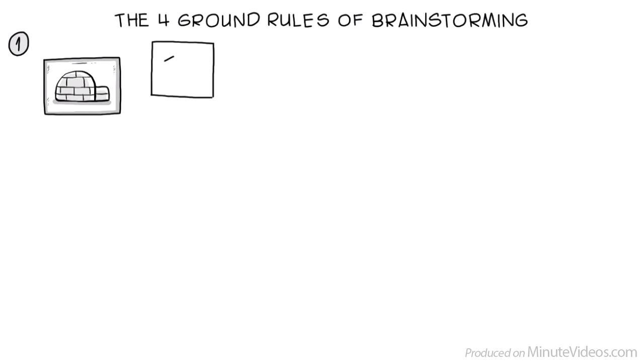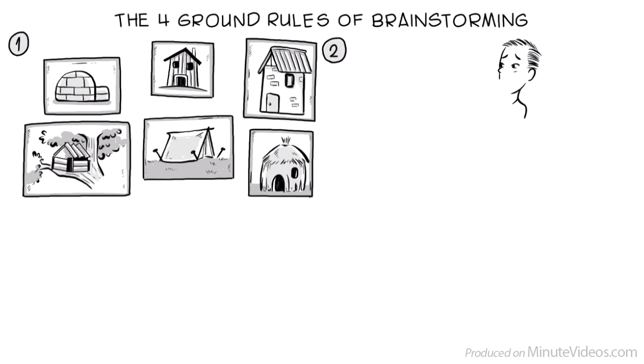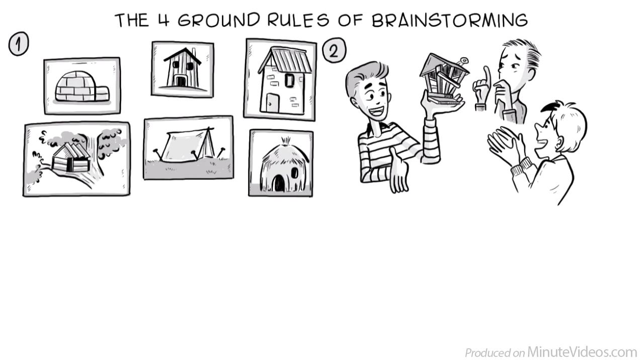Then lay out the four ground rules of brainstorming. One, go for quantity. Get out all the ideas, no matter how silly. Two, withhold criticism. There are no bad ideas.